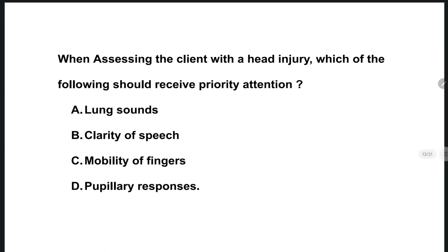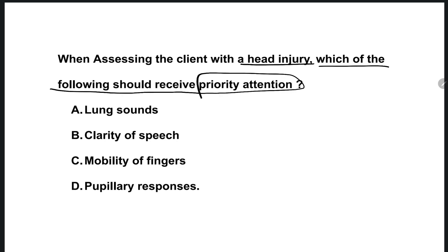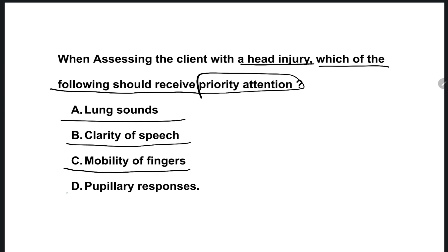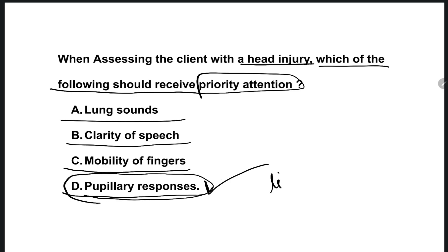The next question: when assessing a client with a head injury, which of the following should receive priority attention? Options are: assess the lung sounds, check the clarity of speech, see the mobility of the fingers, check the pupillary reactions. The right one is option D — we need to check for the pupillary responses to light. This is our first priority.